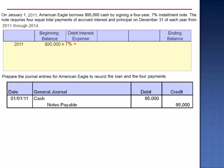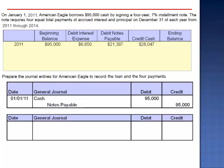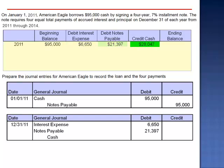Interest expense is 7% of the loan balance. $95,000 multiplied by 7% is $6,650. We will debit notes payable for the amount of the reduction in principal, which is $21,397 — the difference between the cash payment, $28,047, and the amount of interest, $6,650. The journal entry is a debit to interest expense $6,650, debit notes payable $21,397, and a credit to cash $28,047, the amount of the payment.